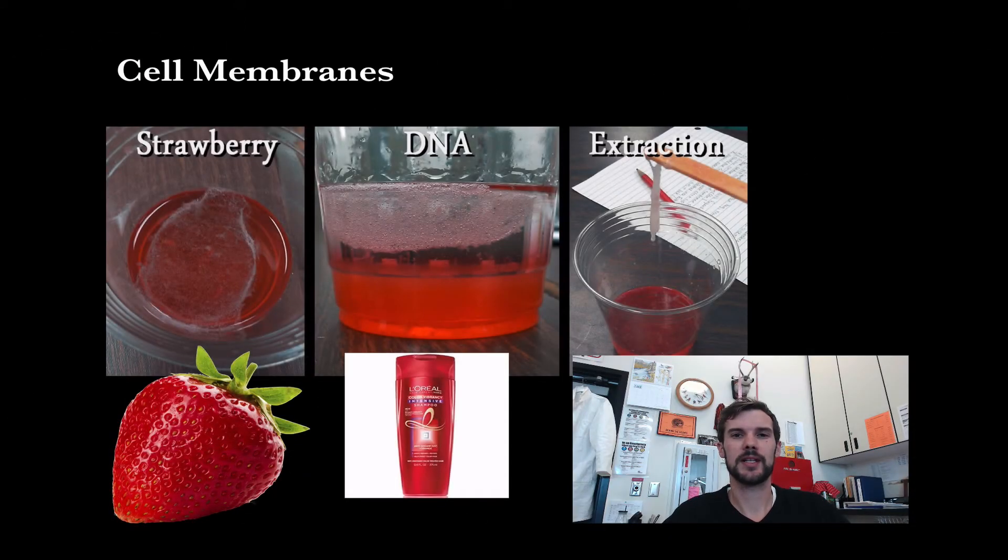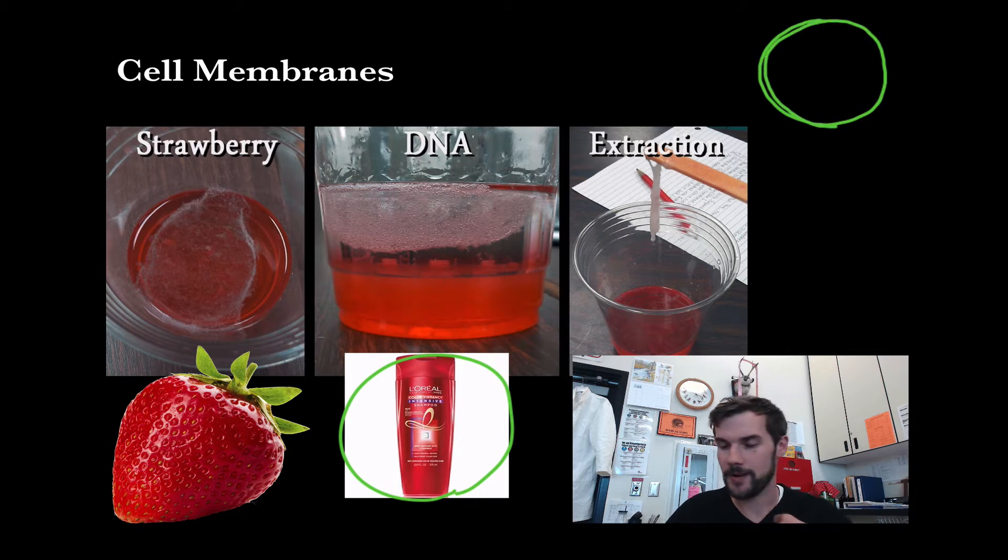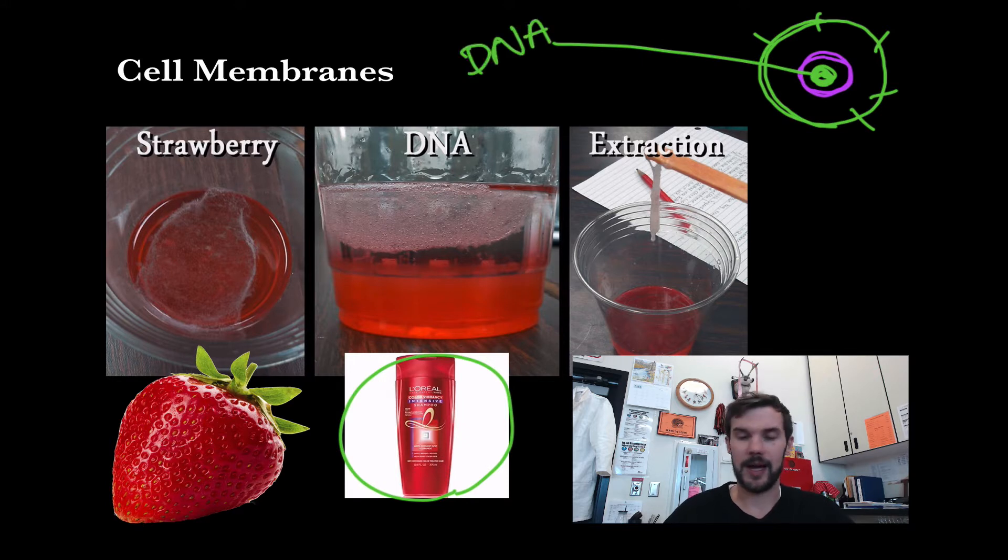Hi, it's Mr. Buckingham and this video is on cell membranes. One of my favorite labs to do that's pretty easy is to extract DNA from strawberries. What we use is some shampoo and mash it with the strawberry juice, and the shampoo will actually destroy the lipids that surround each cell in the strawberry. Those lipids, once they're destroyed, will start to release the DNA that's in our nucleus.